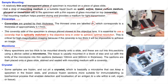Many specimens are too thick to be mounted directly onto a slide and are cut into thin sections using a device called a microtome. The tissue is mounted in a block of wax and cut with the microtome knife into thin sections between 100 nm and 500 nm in thickness, then placed onto a glass slide, stained, and sealed with mounting medium and a cover slip. Some samples are frozen and cut on a cryostat — a microtome that keeps the specimen frozen — producing frozen sections more suitable for immunolabeling, a biochemical process that enables detection and localization of an antigen within a cell, organ, or tissue.